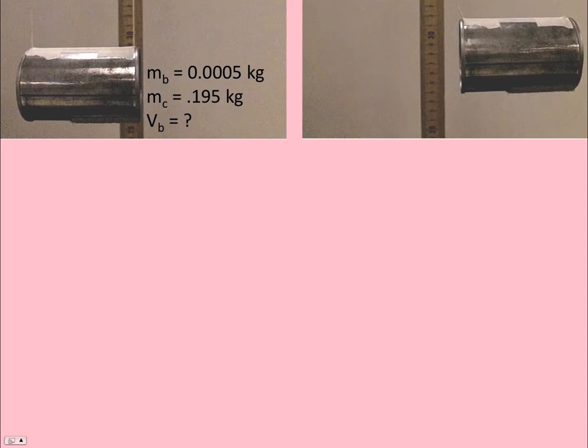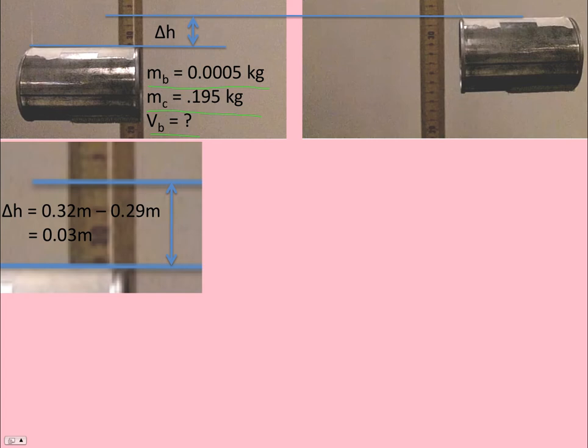And so here is a still of the can before it was shot. The mass of the bullet is a half gram, and the can is 195 grams, and we want the velocity of the bullet. And then here's a still of it at its highest points. And so if we draw a line at those two places and kind of zoom in there, we can see the change in height is about three centimeters. So if you said two or three centimeters from the video, you have a pretty good eye. It might be a tad less than three, but I just kind of rounded to three.